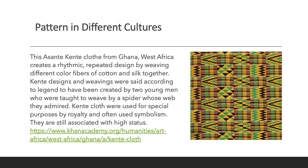Pattern in different cultures. This Asante Kente cloth from Ghana, West Africa, creates a rhythmic repeated design by weaving different color fibers of cotton and silk together. Kente designs and weavings were said, according to legend, to have been created by two young men who were taught to weave by a spider whose web they admired. Kente cloth was used for special purposes by royalty and often used symbolism. They are still associated with high status and you can follow the link to find out more.